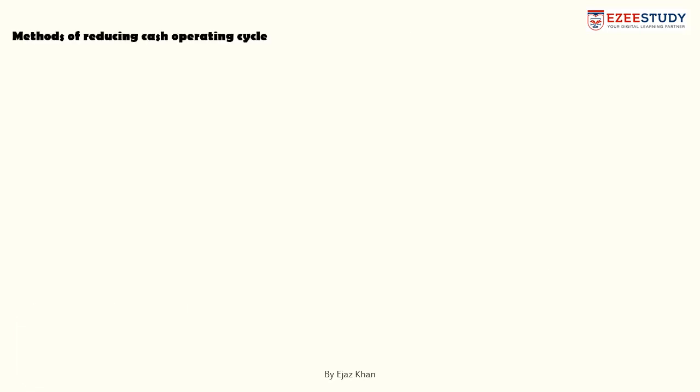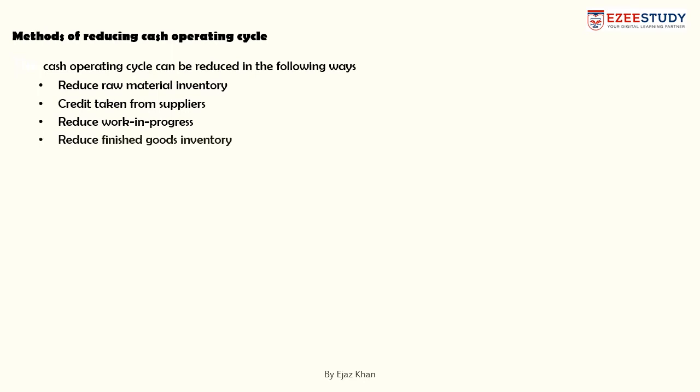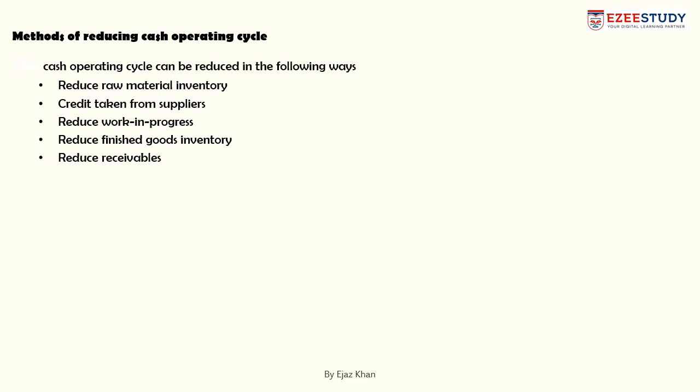An organization can reduce its cash operating cycle in several ways. First, it should reduce raw material inventory, as holding more stock means investing more in current assets. Second, it should negotiate higher credit periods with suppliers. Third, it should improve production efficiency so that raw material is converted faster, reducing work-in-process. Fourth, finished goods inventory should be reduced, and fifth, receivables should be reduced so customers pay more quickly.